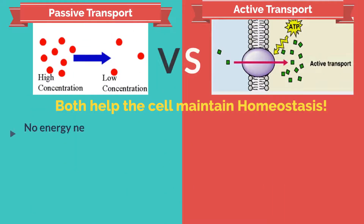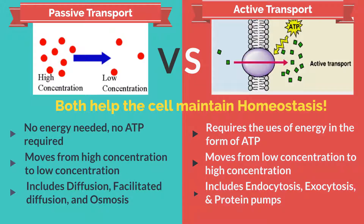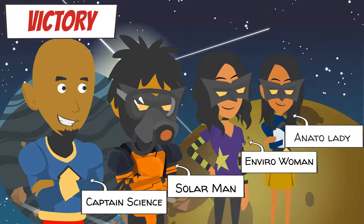Now let's look at our overview for passive versus active transport. All in all, both help the cell maintain homeostasis. In passive transport, no energy is needed and no ATP is required. It moves from a high concentration to a low concentration, and it includes diffusion, facilitated diffusion, and osmosis. In active transport, it requires the use of energy in the form of ATP, and it moves materials from low concentration to a high concentration. It includes endocytosis, exocytosis, and protein pumps. Victory with Captain Science, Solar Man, Enviro Woman, and Anato Lady.